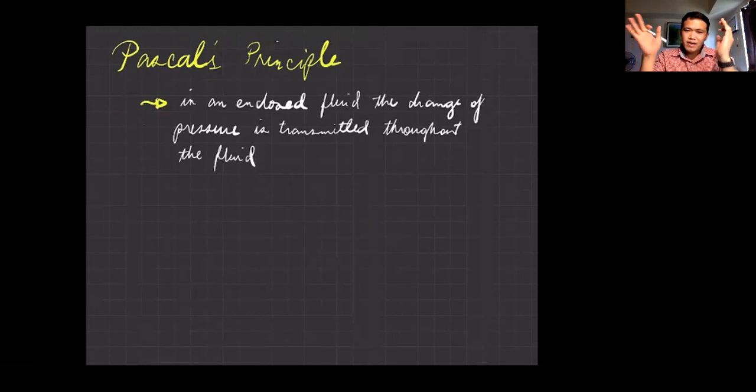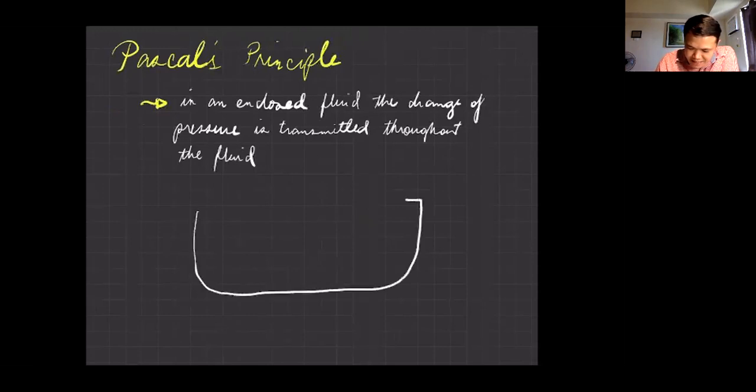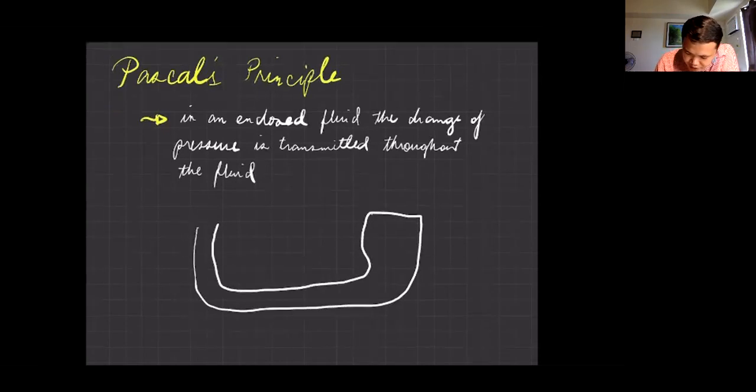So let's say you have a fluid inside this piping system. One end of the pipe has a higher area or bigger area, the other end is a little bit smaller area. There's area one here, there's area two here which is bigger.